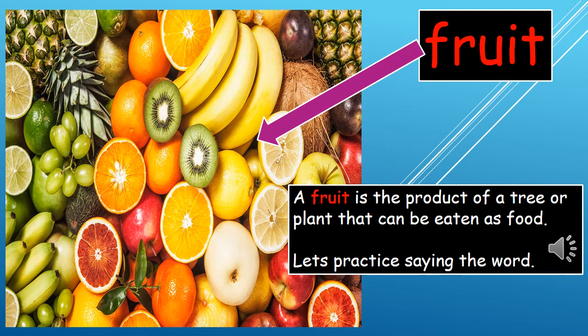Our first word is fruit. A fruit is the product of a tree or plant that can be eaten as food. Let's practice saying the word out loud three times each. Let's begin.